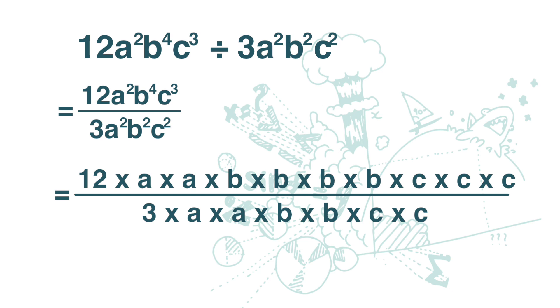Then we simplify the fraction. 12 divided by 3 is 4. 3 divided by 3 is 1. The two a's top and bottom cancel out. The two b's top and bottom cancel out. Two c's top and bottom cancel out.